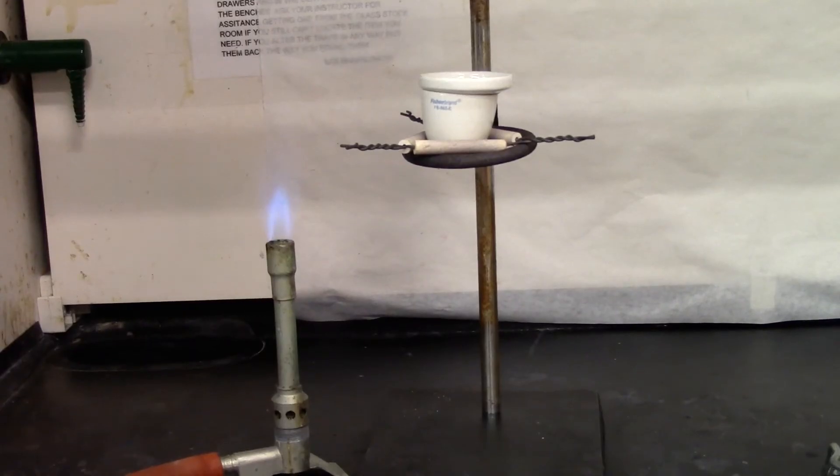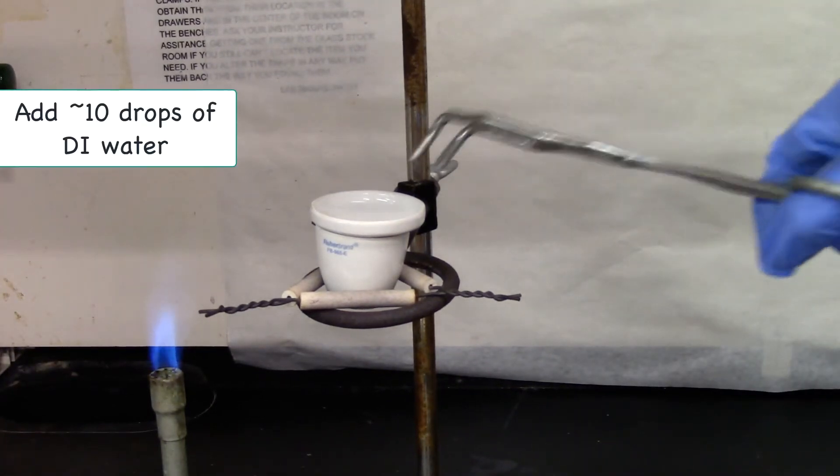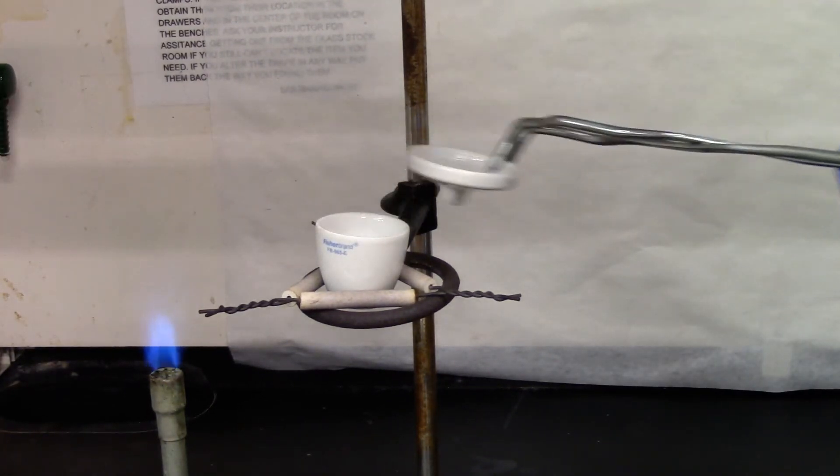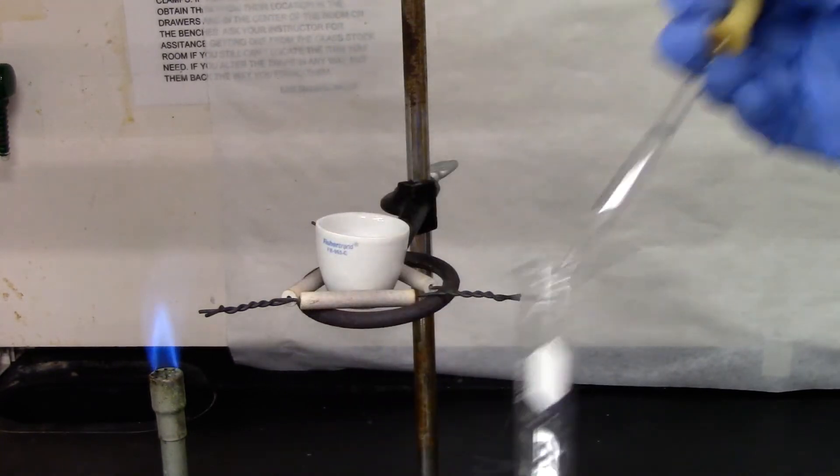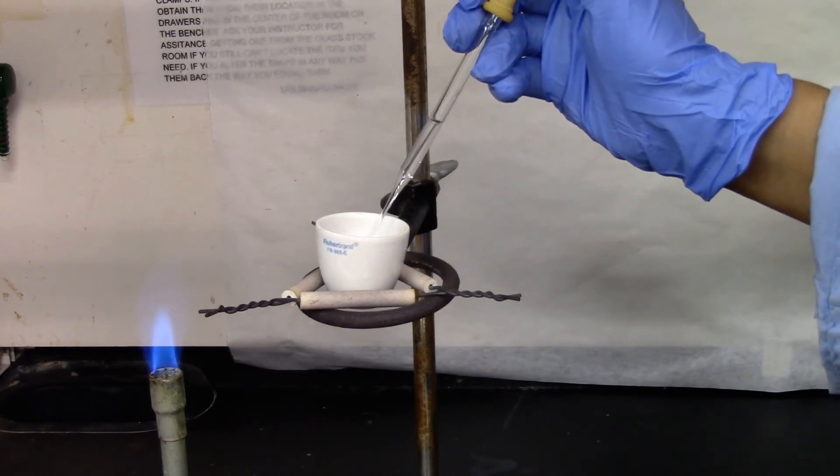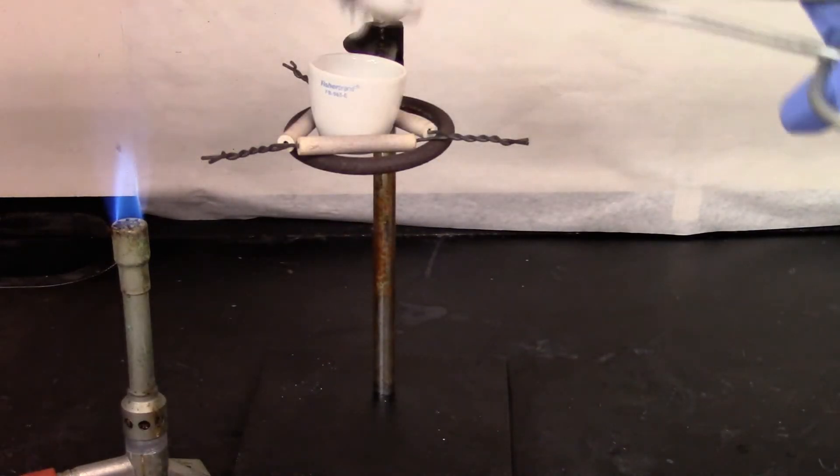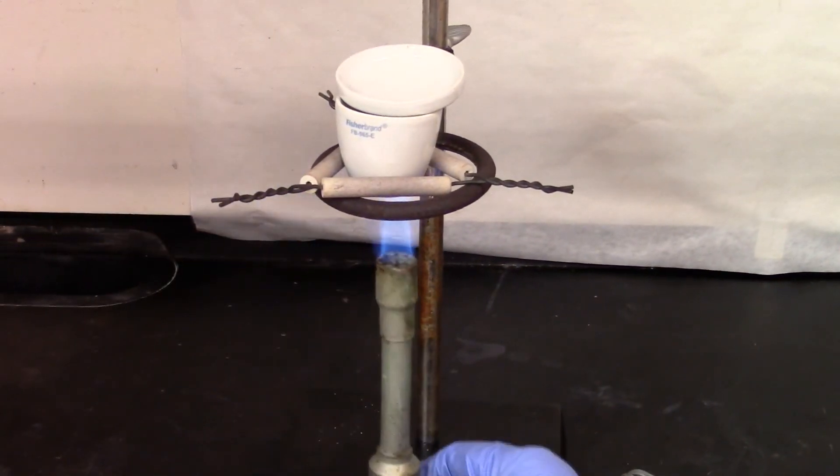I will let it cool for about 10 minutes and then add about 10 drops of water and then heat it again. So it's been about 10 minutes. I'm going to add 10 drops of DI water using a pipette. So now I'm going to put the lid back and then start heating for another 10 minutes.